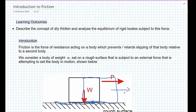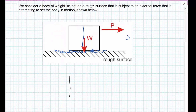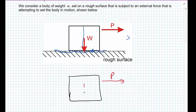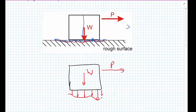We're considering this box: it has a weight W, it's sat on a rough surface, and we're subjecting it to an external force attempting to get it into motion. We're going to draw the forces acting on this block. We have force P on the block and weight W. The weight W leads to a set of normal forces that are quite uneven depending on the roughness of the surface, and there'll also be another set of forces — the friction forces, which we'll call ΔF.